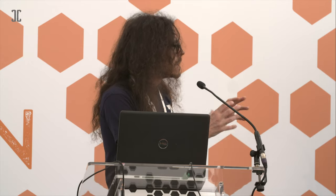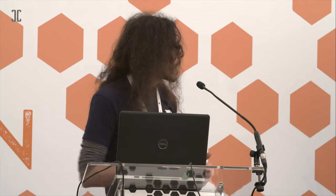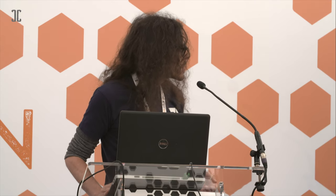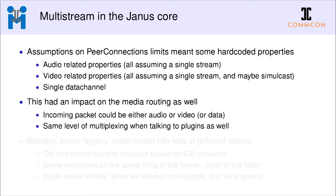For the Janus core, we had to identify incoming streams and figure out which existing stream they related to, how to pass them to plugins, and how an incoming stream from a plugin could be sent to the right place. We had the same hard-coded properties there too, requiring some refactoring. Media routing was updated: before, we only checked if a packet was audio, video, or data; now we check which stream it belongs to — is it an SSRC we know? Do we need to use the MID?